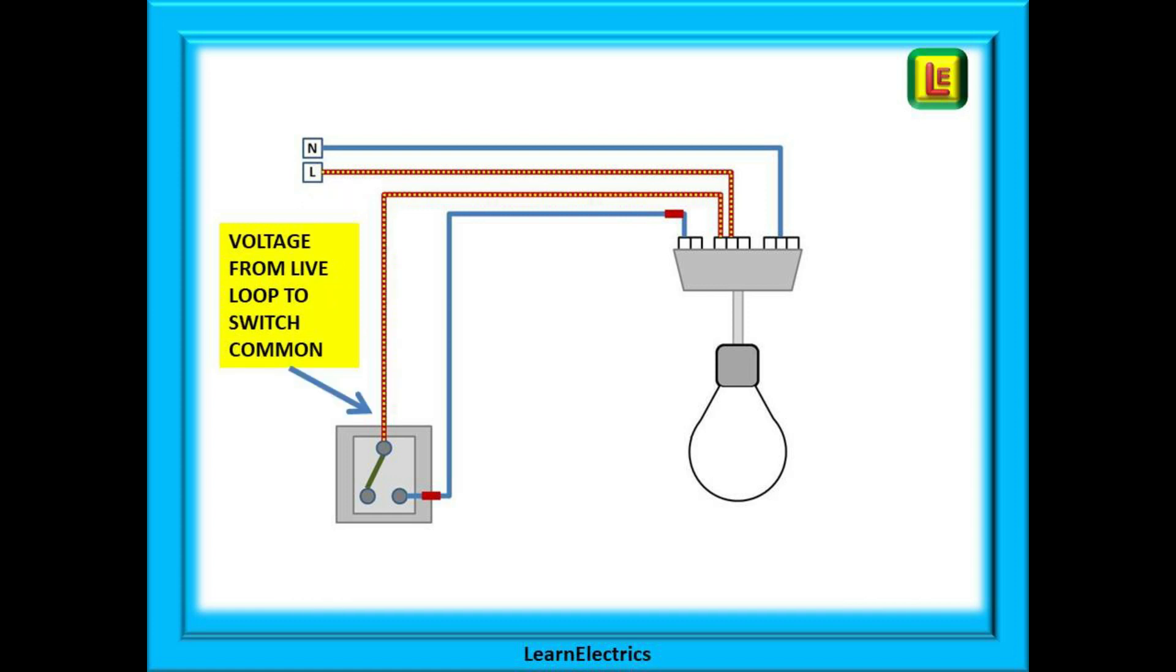Electricity voltage flows from the live loop along the brown wire to the common terminal of the switch. Because the switch is in the off position, in other words the contacts are open, electricity cannot flow any further and the lamp is off.